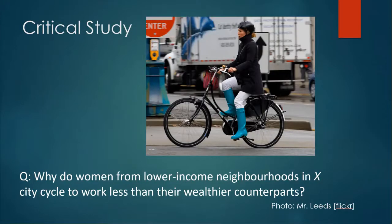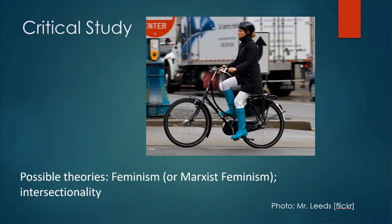A third type of study on bicycle commuting — a critical study — might ask: why do women from lower income neighborhoods cycle to work less than their wealthier counterparts? The researchers might have used the first positivist paper, examined the data, and seen that women in certain lower income neighborhoods cycle to work less, and wanted to ask why. Critical theories used might include feminism, which examines the ways inequality between men and women is driven by social, economic, political, and ideological forces — or specifically, theories of Marxist feminism, which looks at how women are affected by modern capitalism. Researchers might also use theories of intersectionality to examine how women from particular racial or ethnic groups or experiencing disability may be affected by employment and transportation choices.